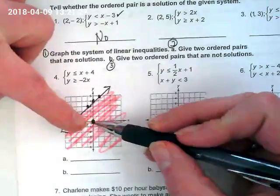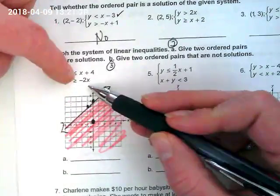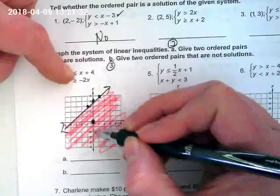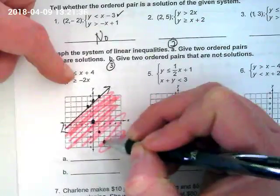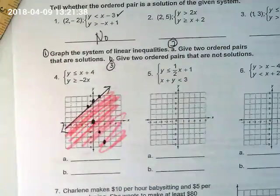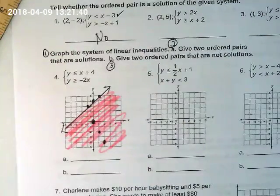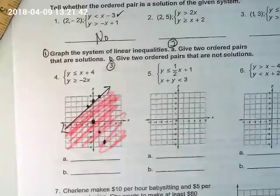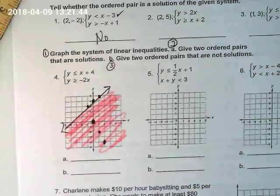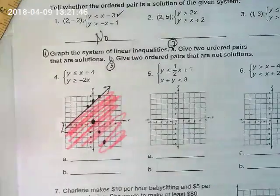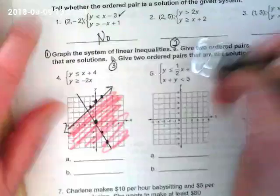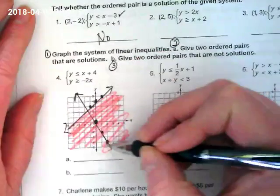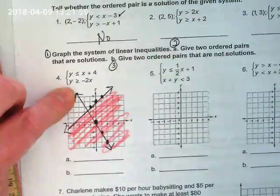So we're starting at the origin. What's our slope? Negative two over one. Okay, so I'm going to go down two and over one. Down two over one. Dashed or solid? Solid. And where do we shade? Above.